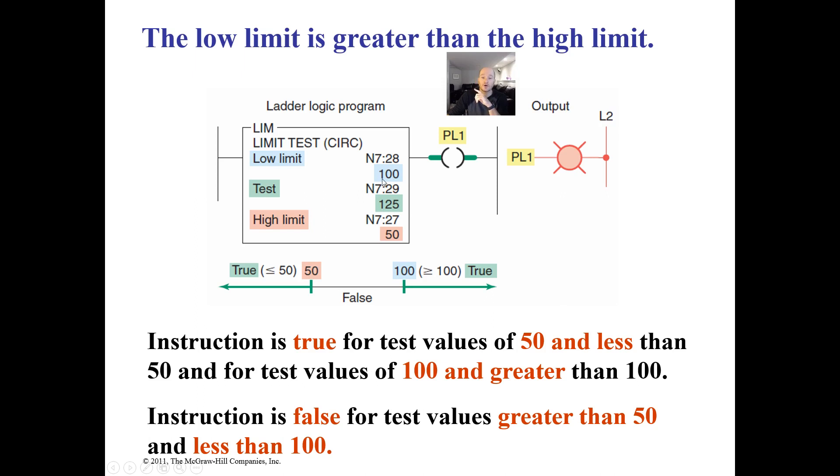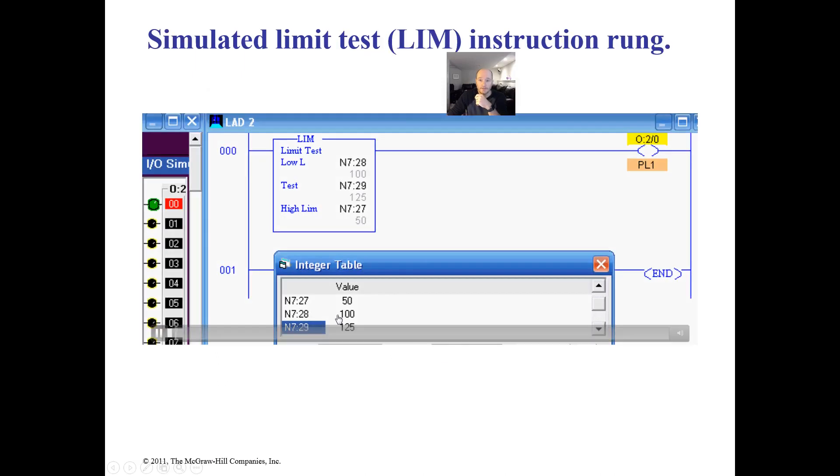The other way we can set up the limit test is if we have our larger number in the lower limit and the smaller number in the high limit. We've switched the logic here. What that means is it will always be true if it is lower than or higher than this set limit, in this case between 50 and 100. You have to be careful with this instruction. Here's how it works. It's on because I'm outside that range, but if I'm inside that range it goes false.